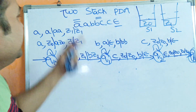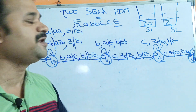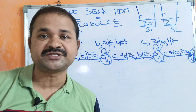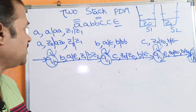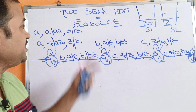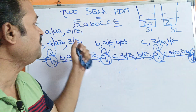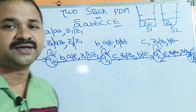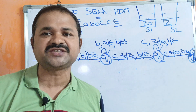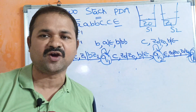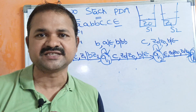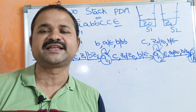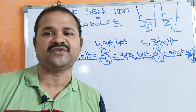In this way we can implement two-stack PDA. The best example for this is N number of A's followed by N number of B's followed by N number of C's, where N is greater than or equal to 1.